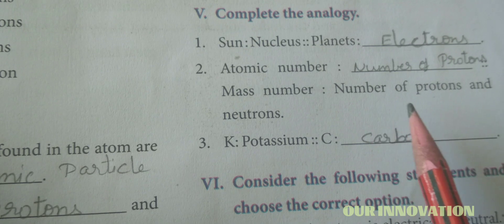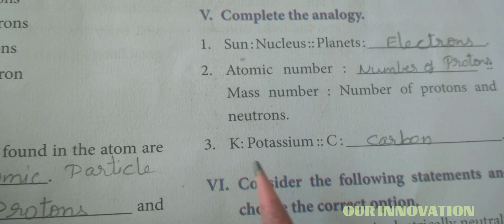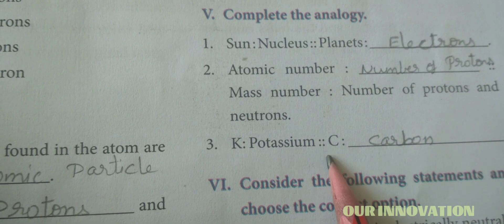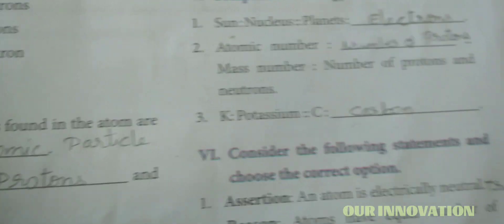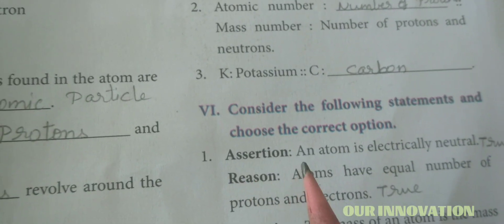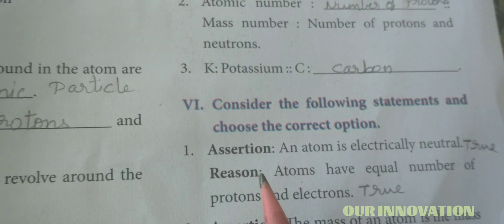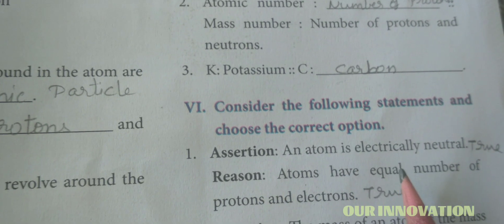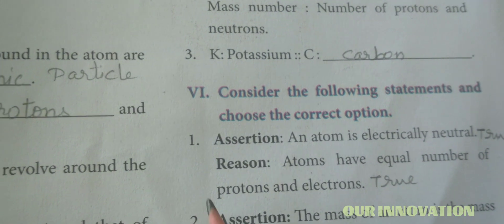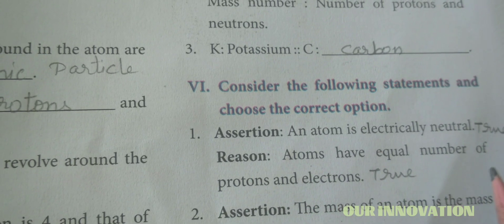Complete the analogy: Sun is to nucleus as planets are to electrons. Atomic number is the number of protons. Mass number is the number of protons and neutrons. K is potassium and C is carbon. Consider the statement and choose the correct option. Assertion: An atom is electrically neutral, that is true. Reason: The atoms have equal number of protons and electrons, that is true.